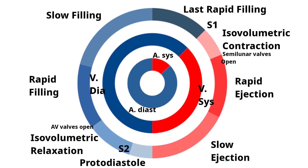Isovolumetric contraction ends when the semilunar valves open up and blood is ejected into the aorta and pulmonary artery. There is a rapid ejection of blood at the beginning, followed by a slow ejection phase as blood volume decreases. We can compare the murmur of aortic stenosis to these phases: it is a crescendo-decrescendo murmur, meaning it increases in intensity during the rapid ejection phase and decreases during the slow ejection phase.